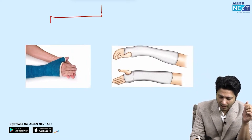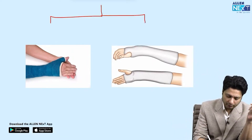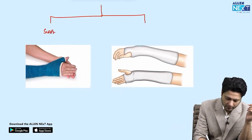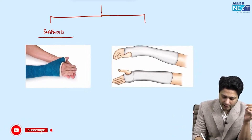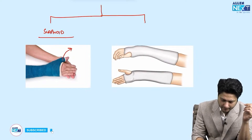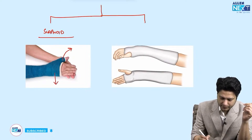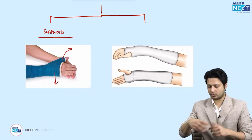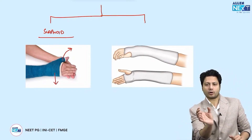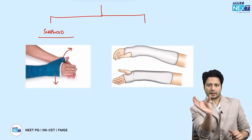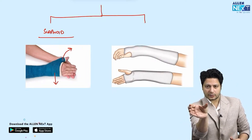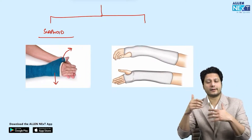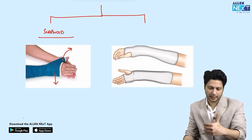Both the scaphoid cast and the Colles cast are below-elbow casts. You identify the scaphoid cast by the thumb being kept in abduction and the wrist in dorsiflexion — as if you are holding a glass. This is why it is called the glass-holding cast.